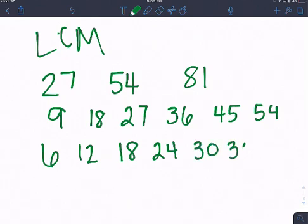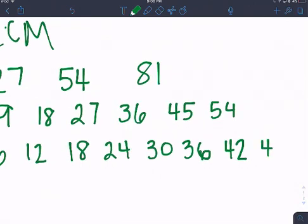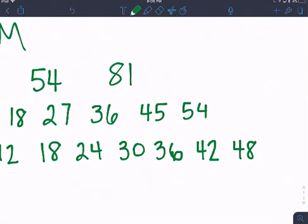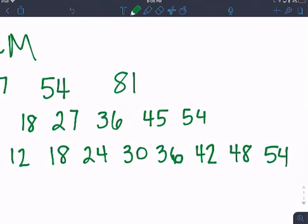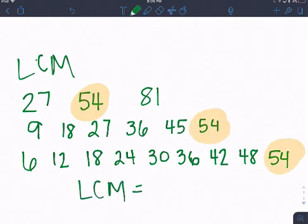24, 30, 36, 42, 48, 54. So I have 1 in each row. I have 54 here, 54 here, and 54 here. So my least common multiple is 54.